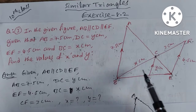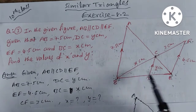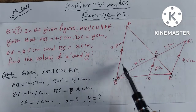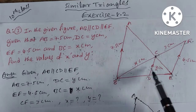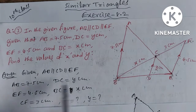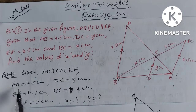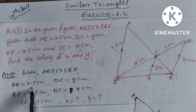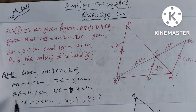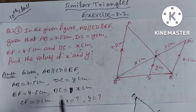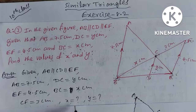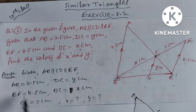Here we have two examples using basic proportionality theorem with two similar triangles. Given data: AB is parallel to CD is parallel to EF. AB is equal to 7.5, DC is equal to Y centimeters, EF is equal to 4.5 centimeters, BC is equal to X centimeters, CF is equal to 3 centimeters. Find X and Y.